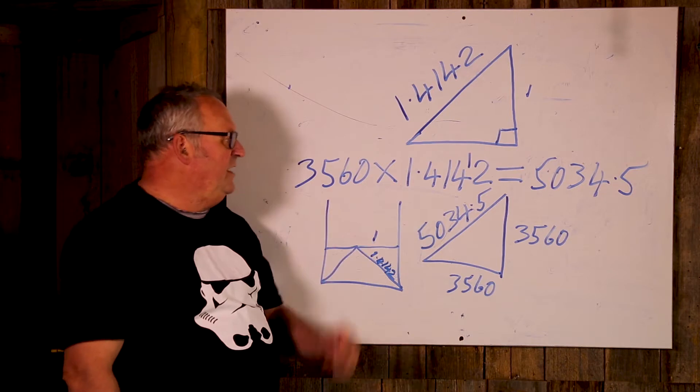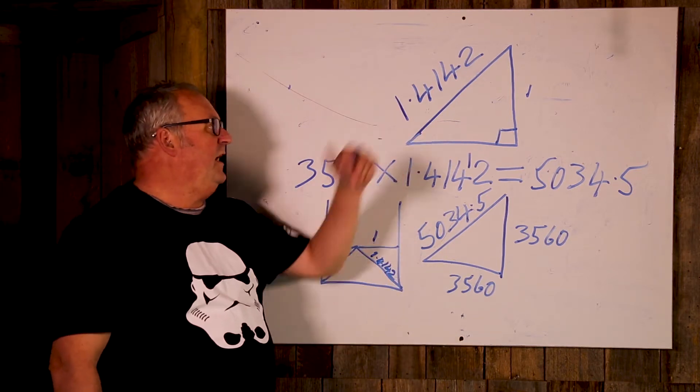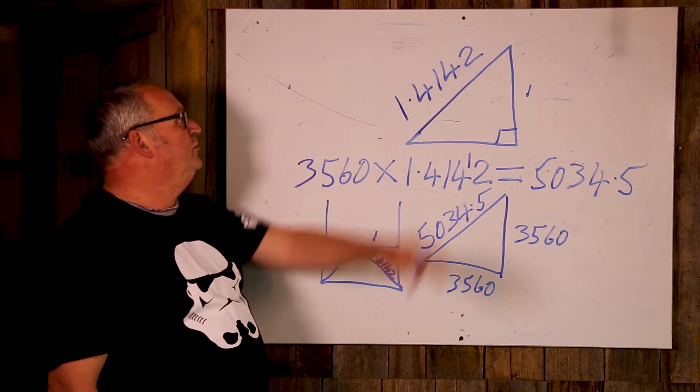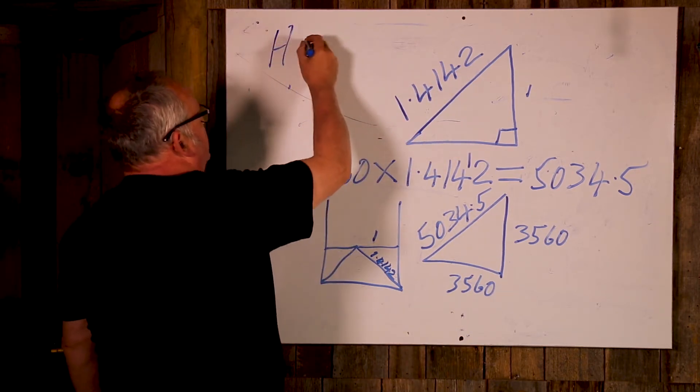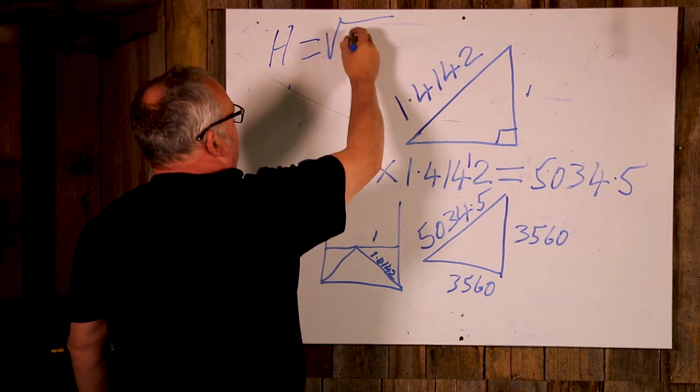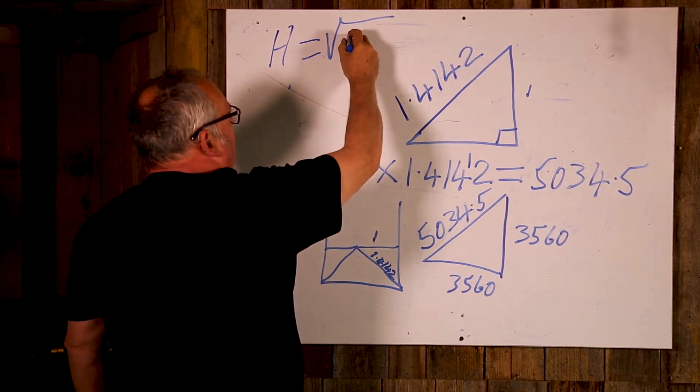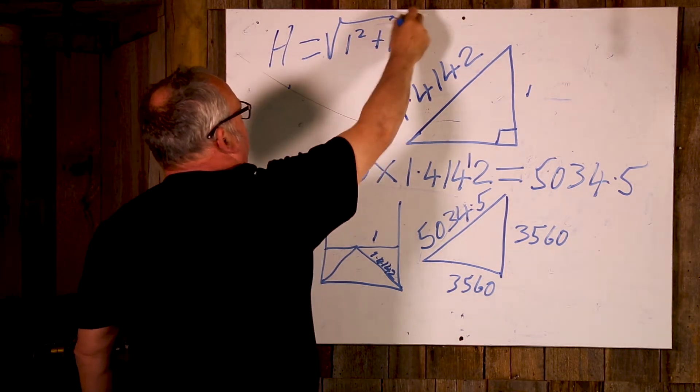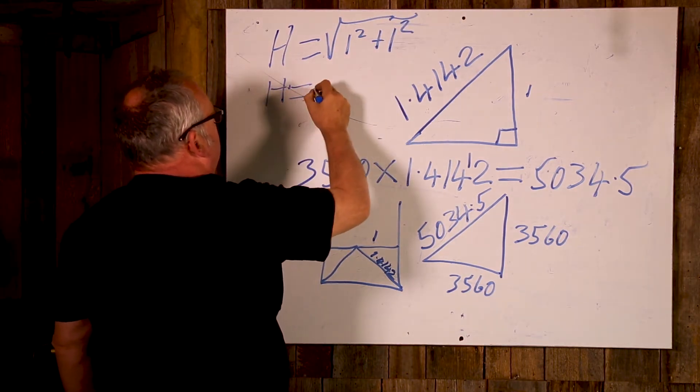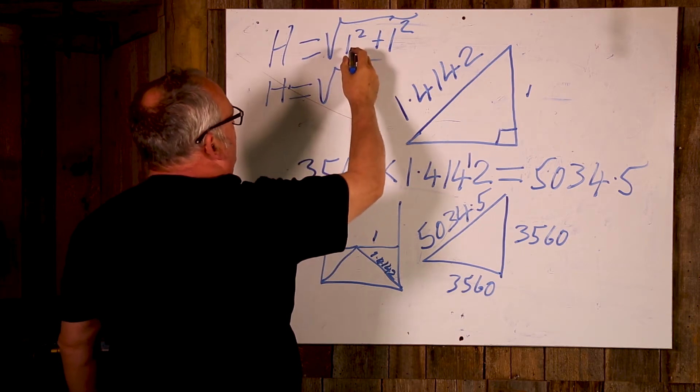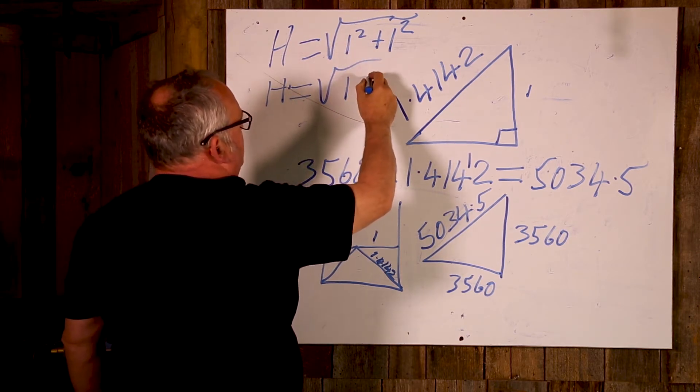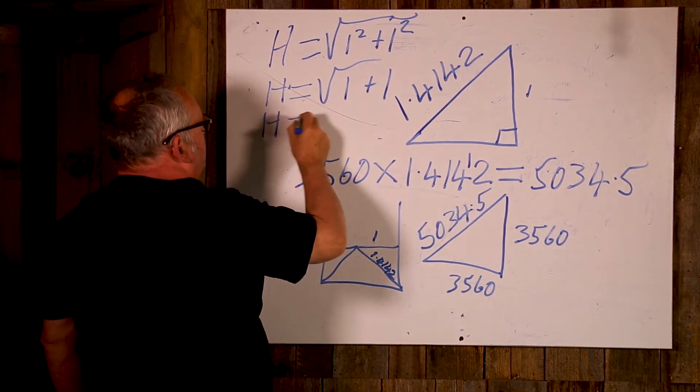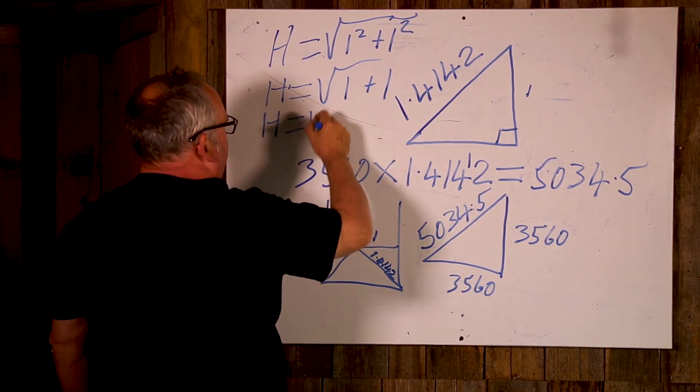Once you get the handle on it, you'll find that is the world's handiest number, the square root of 2. Because we remember h equals the square root of 1 squared plus 1 squared. H equals square root. So 1 times 1 is 1, so 1 plus 1. H equals the square root of 2.